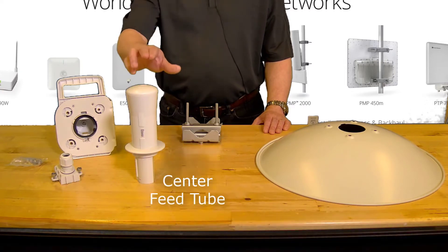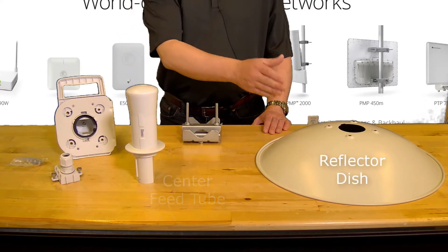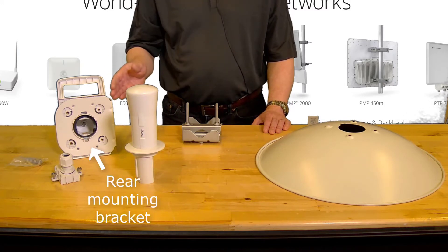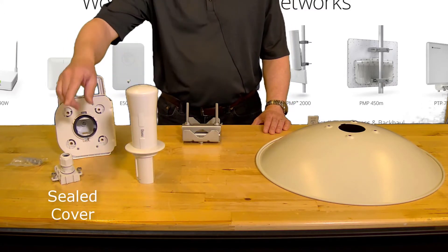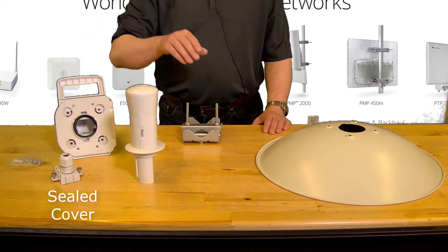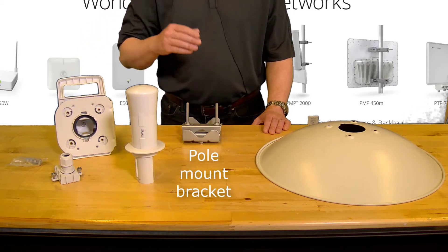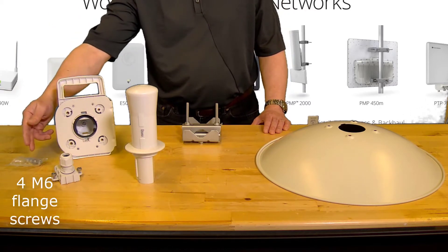A center feed tube, a reflector dish, a rear mounting bracket, a sealed cover with a cable gland, a pole mount bracket, and a pack of four M6 flange screws.